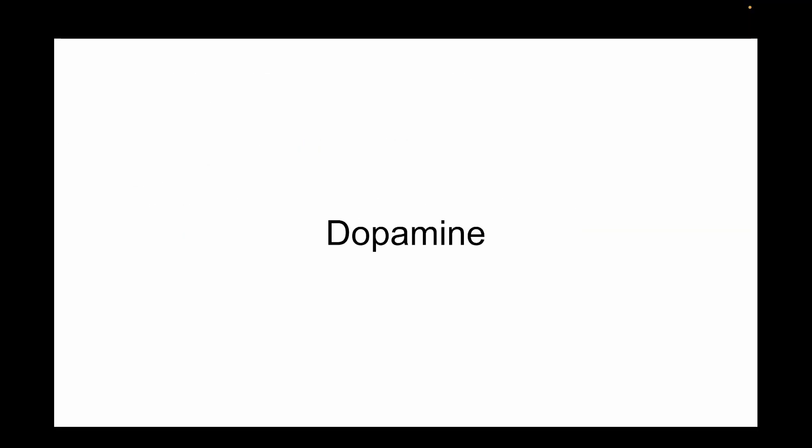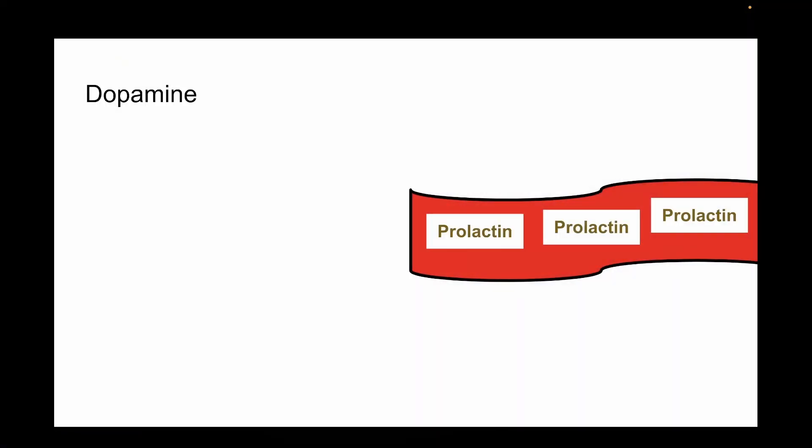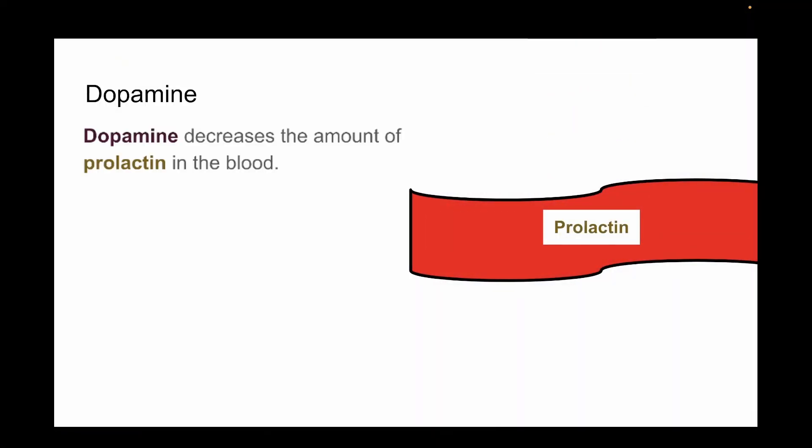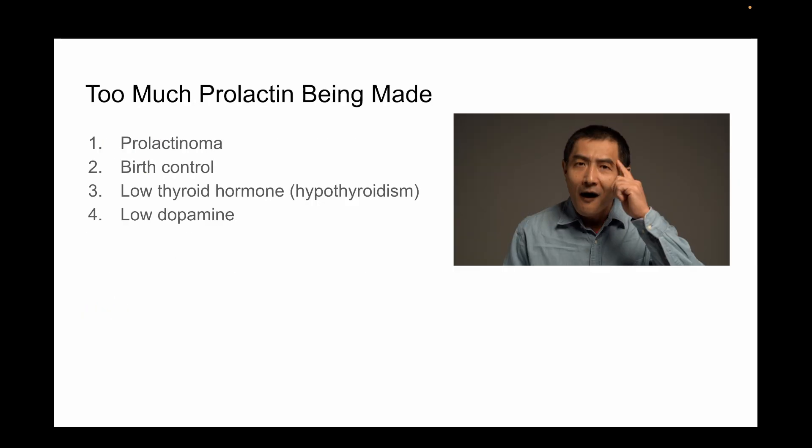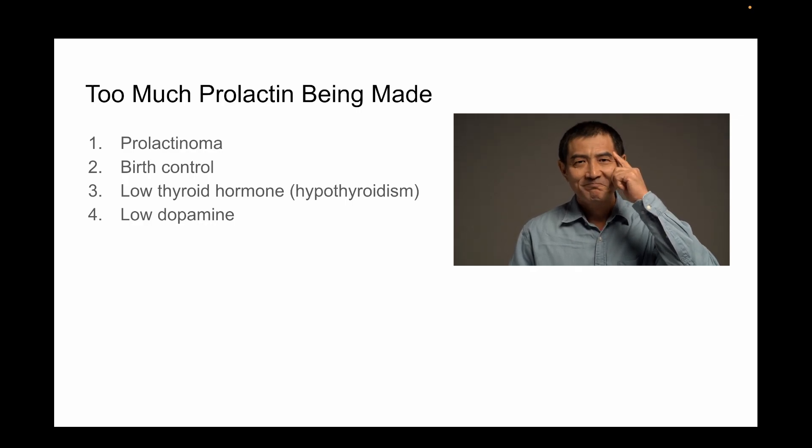Dopamine, another hormone in the body. This hormone is most known as the one that makes people feel happy and motivated. Dopamine also decreases the amount of prolactin in the blood. For this reason, medications that decrease the amount of dopamine will indirectly increase the amount of prolactin. In addition, head injuries can damage the part of the brain responsible for producing dopamine. So here are four reasons why too much prolactin could be made in the body.